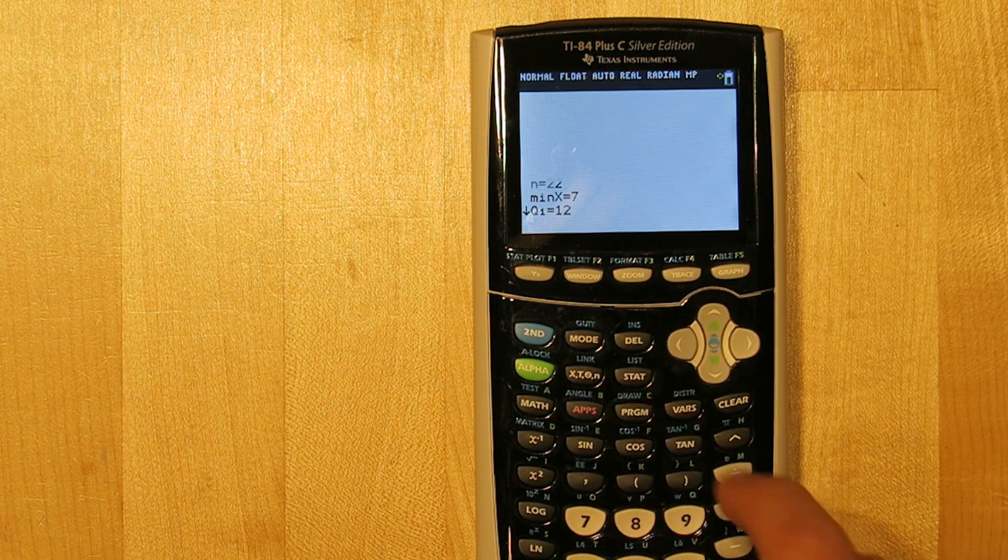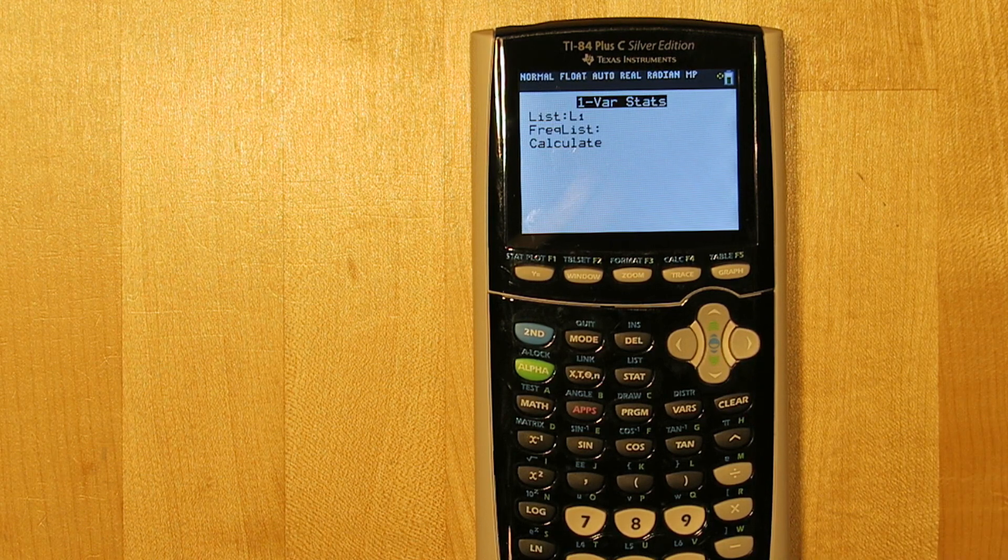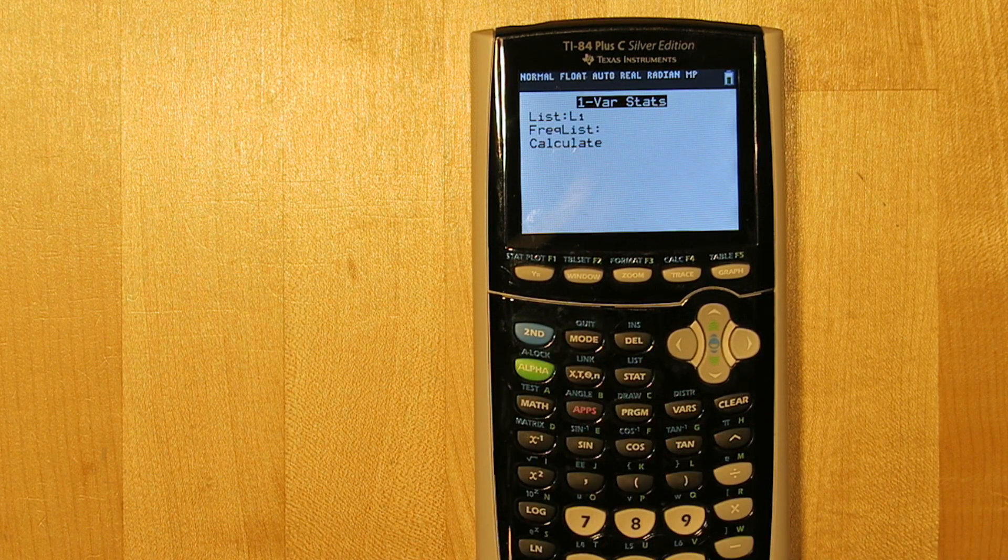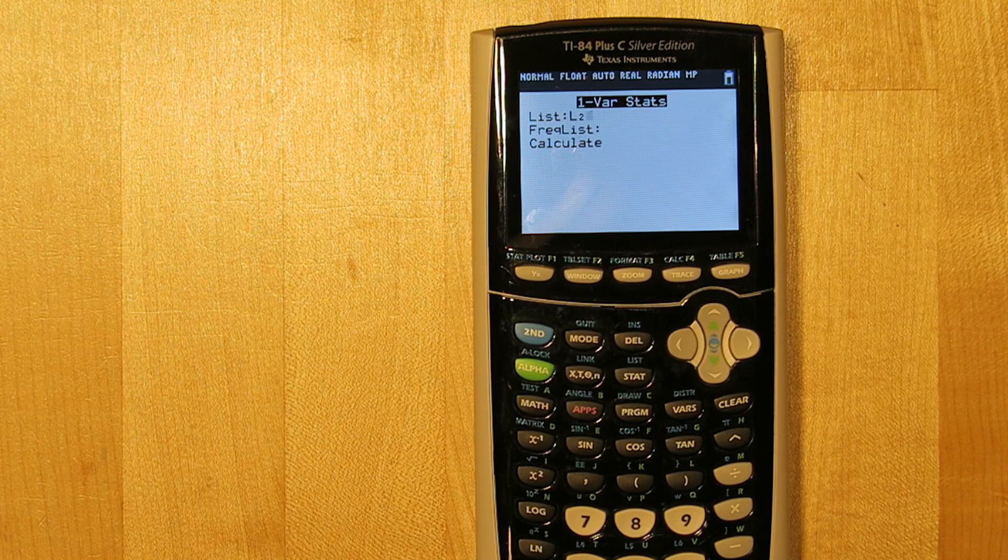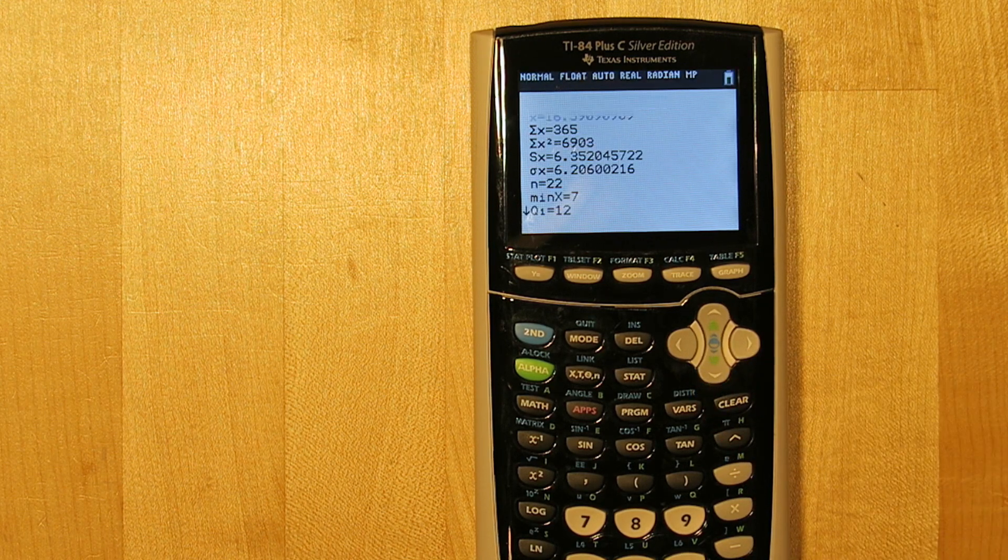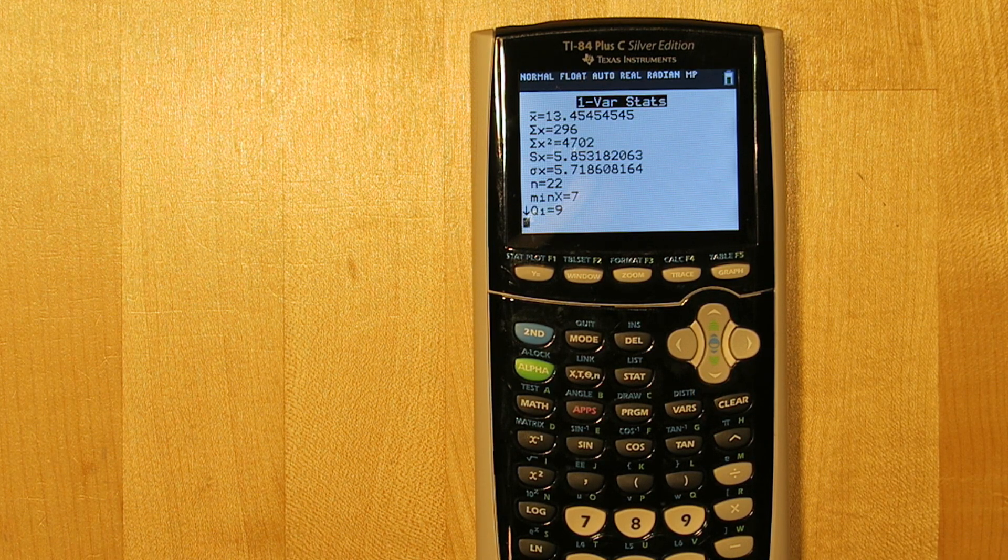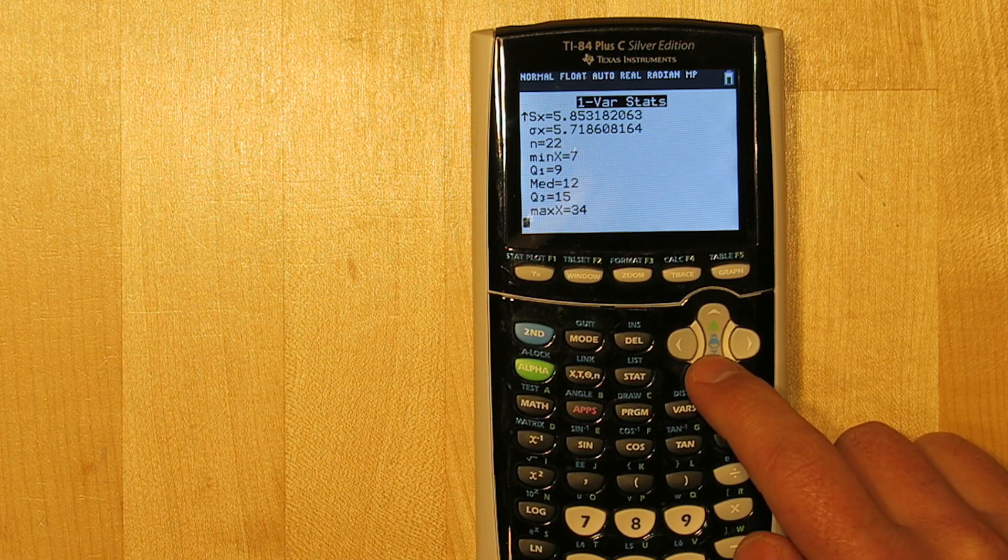You can do the same thing for Pirate Plunge, by pressing Stat, go to Calculate, 1var Stats, but change this to List 2 by pressing 2nd, and then the number 2. There's your data for Pirate Plunge.